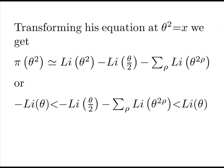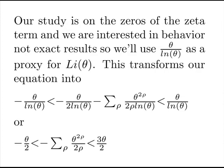So we wind up with squeezing the log integral at theta over 2 plus the sum over the zero terms between our bounds. Our study is on the zeros of the zeta term, and we're interested in behavior, not exact results. So we're going to use theta divided by log theta as a proxy for the log integral at theta.